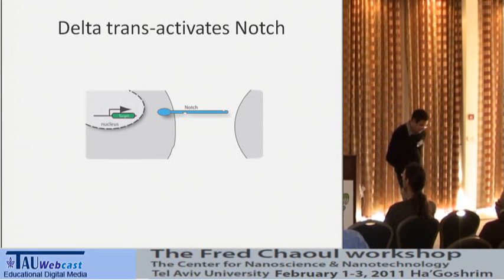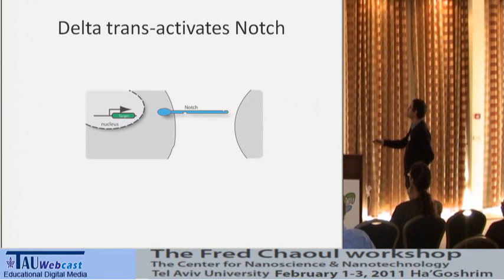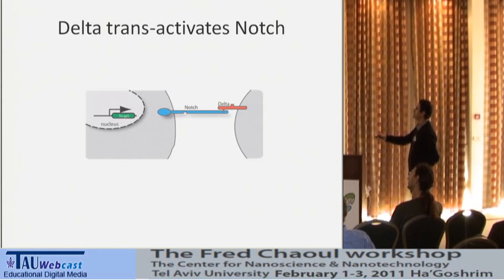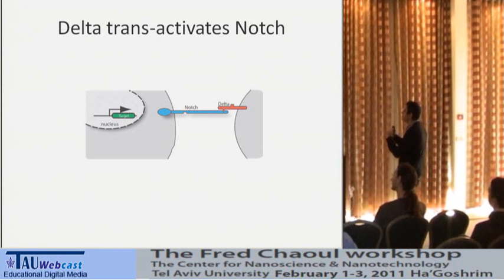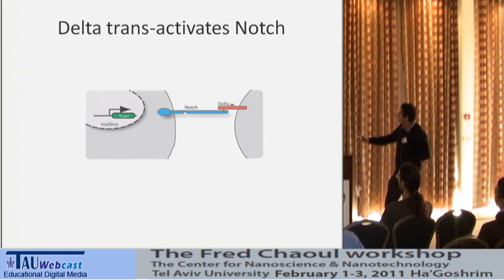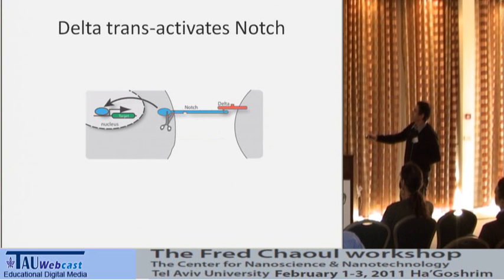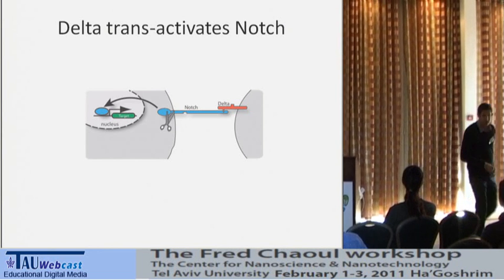Notch is a transmembrane receptor that sits on the membrane of a cell. It can interact with another transmembrane protein called Delta — the ligand for the Notch receptor — which is also attached to a cell. This forces two cells to be in direct contact for signaling. Once Notch and Delta bind to each other, it leads to a series of events in which the intracellular domain of Notch is cleaved, then goes to the nucleus and activates downstream target genes.